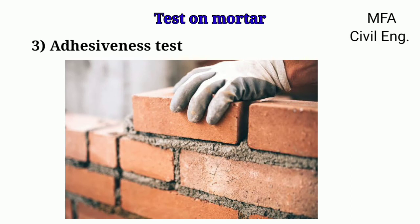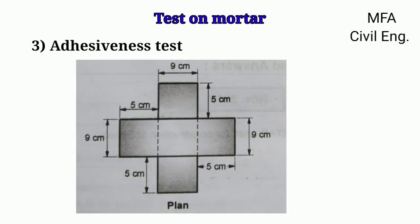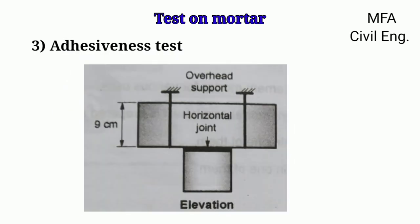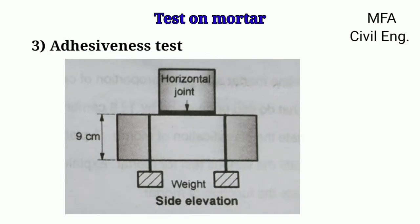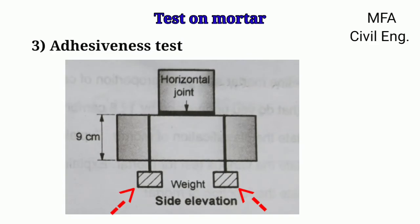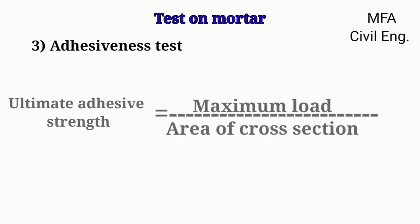In an adhesiveness test, two standard bricks are kept at a right angle to each other. These two bricks are joined with mortar, the upper brick is suspended from an overhead support, and a weight is attached to the lower brick. The weight is increased gradually and the maximum weight at which the bricks are separated from each other is noted. The ultimate adhesive strength of a brick is then found using the formula: ultimate adhesive strength equals maximum load or weight divided by the area of cross-section of the mortar.